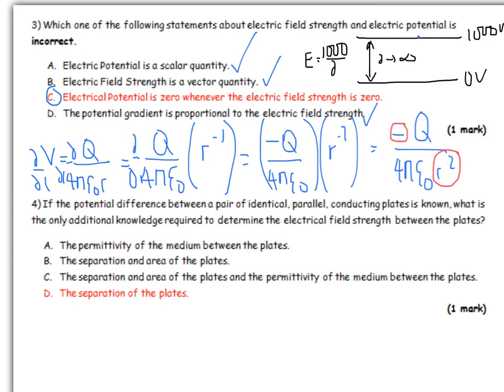Let's have a look at question four. If the potential difference between a pair of identical parallel conducting plates is known, what's the only additional knowledge required to determine the field strength between the plates? If you have a uniform field, straight away you should be thinking E is ΔV over d. So if you know the potential difference, you know ΔV. All that's left to know is the d, which is the separation of the plates.